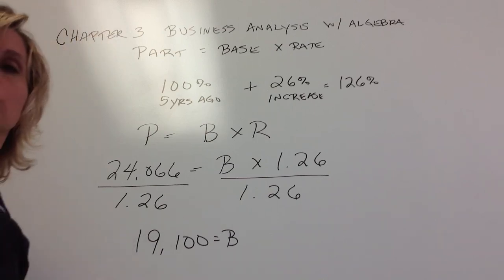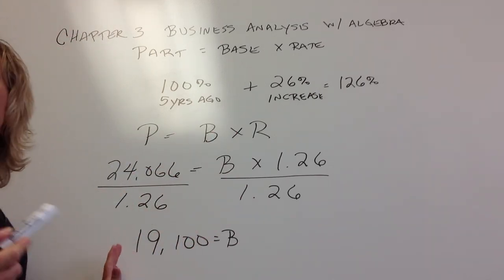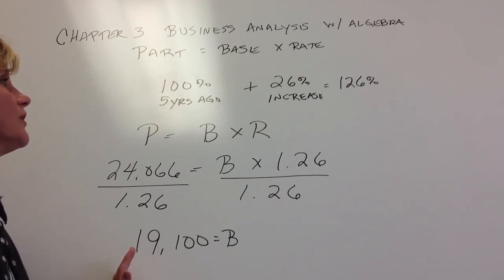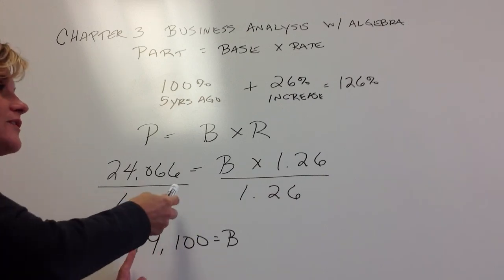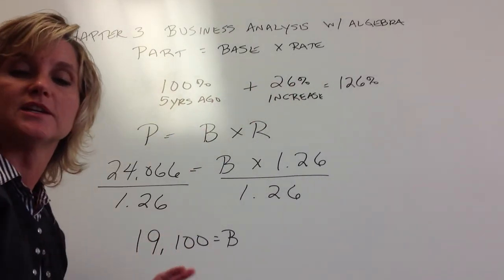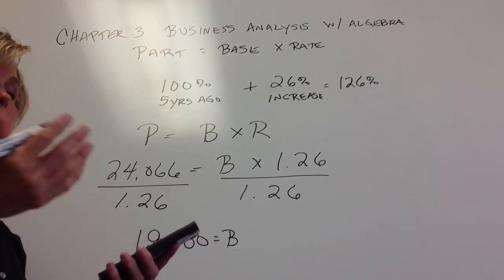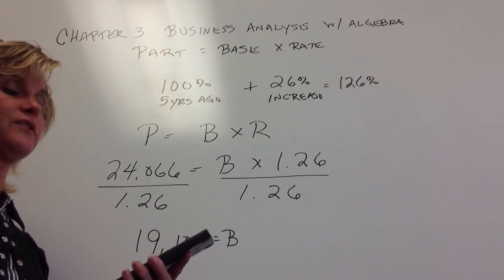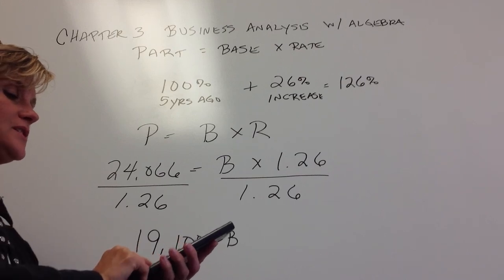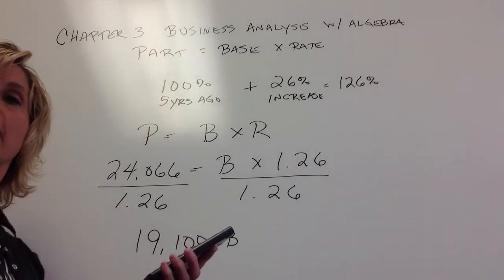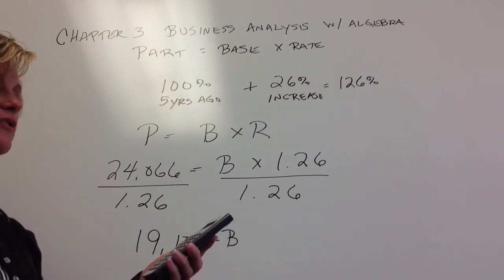Now what students will do, and I'm not going to put it on the board because I don't want to encourage you to do it. Students will do it in a very short-cutted manner. So they'll read the problem and they'll say, well, if weddings today are $24,066 and it's an increase of 26%, if I just multiply that, I get an increase of $6,257. And then if I subtract that from my $24,066, that should take me back to what it was five years ago. If you shortcut it that way, your answer would be $17,808.